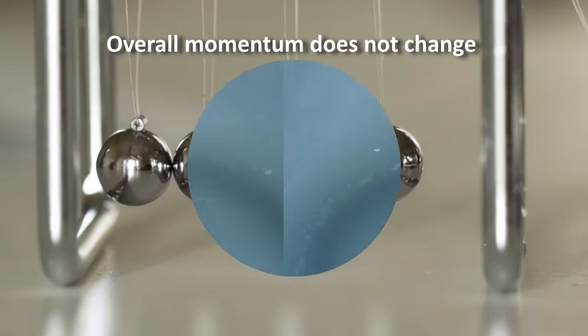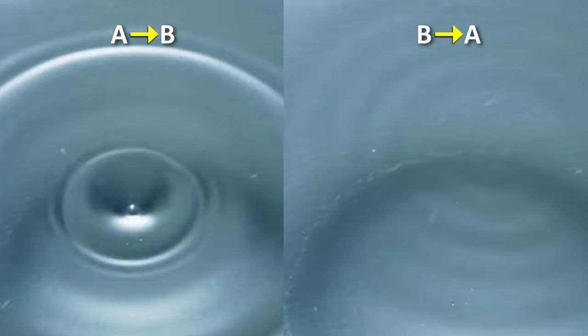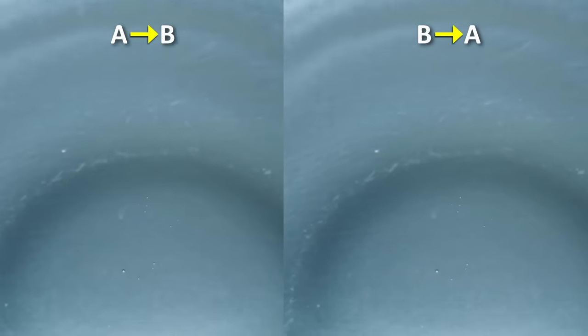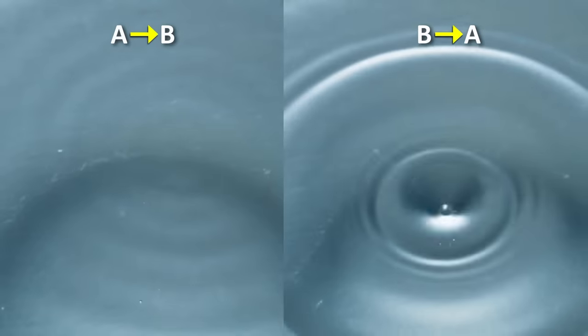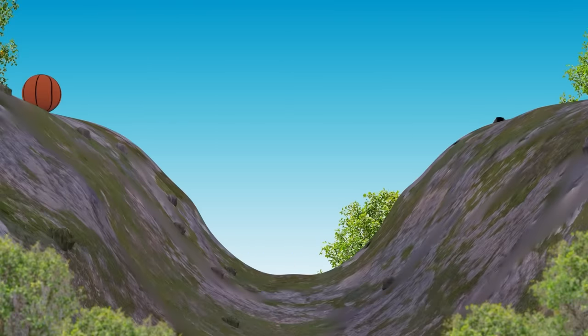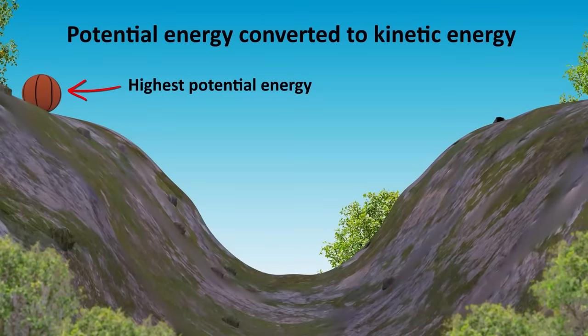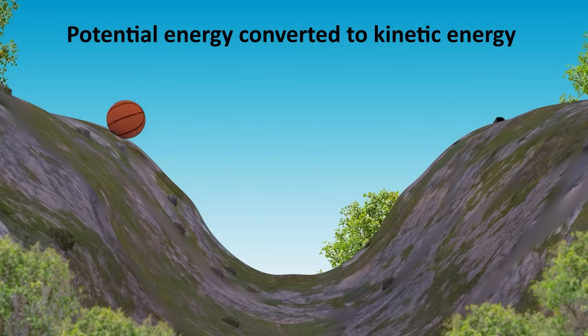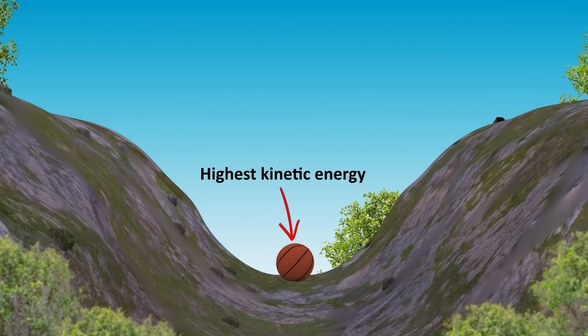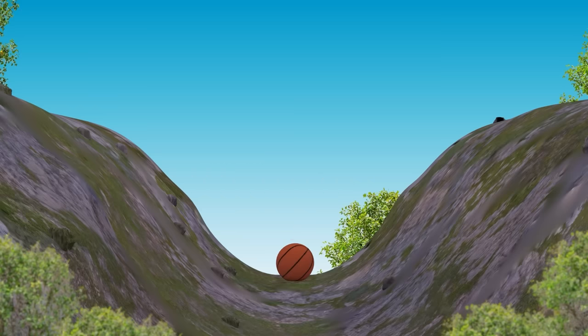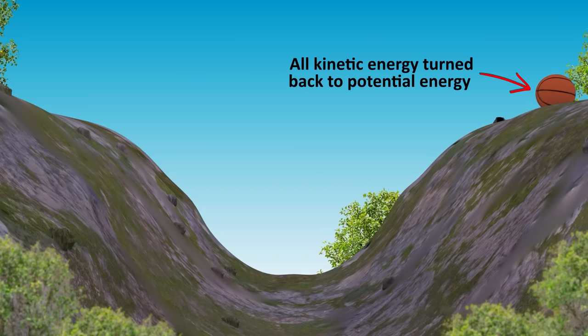But if something is allowed to change from say configuration A to configuration B, then why shouldn't the reverse also be allowed from B to A? When a ball rolls down a hill from a certain height, it should be able to roll back up to the same height. If energy is conserved, then all its potential energy, when it is on the top of the hill, is converted to kinetic energy at the bottom. And this kinetic energy should completely convert back to potential energy, back to the height the ball originally started from.